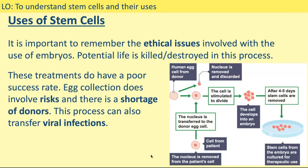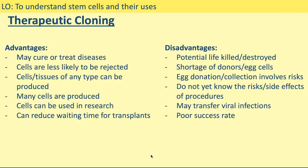It is still important to remember the ethical issues involved with the use of embryos. Even though this embryo is produced solely for the purpose of creating genetically identical stem cells, it is still an embryo, and if implanted into a womb it would still develop and grow into a baby — so it is still potential life being destroyed in this process. These treatments also have quite a poor success rate and are not always successful. Egg collection also involves risks and there is a shortage of egg donors. As with other processes involving embryonic stem cells, viral infections can also be transferred. A summary slide of the advantages and disadvantages of therapeutic cloning is on screen — pause to copy these down if needed.